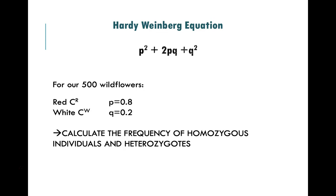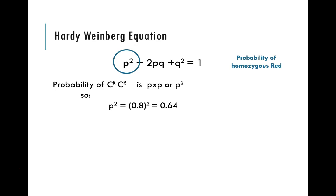We can use these parts of the equation to calculate the frequency of our homozygous individuals and our heterozygous individuals. This is going to correlate to the number of individuals in a population. Let's first start by calculating the probability of being homozygous for red. So in this case, this is a red flower. The probability of being homozygous red is p squared. So p was calculated as 0.8, so p squared is 0.64.